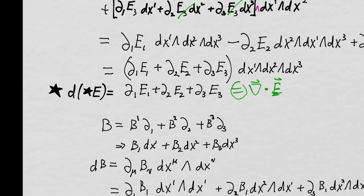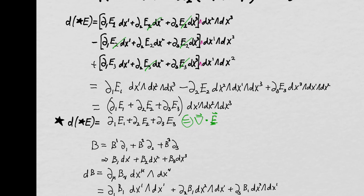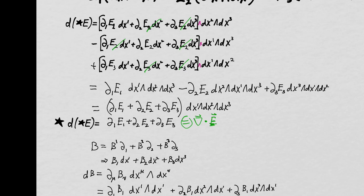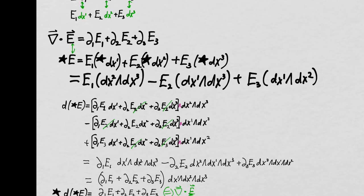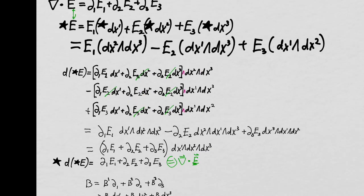That divergence ends up being equal to — as we saw in our last lecture — the Hodge-dual of the exterior derivative of the Hodge-dual of the vector field understood as a vector field on a manifold, where we now replace the Gibbsian unit vectors x, y, and z with our partial derivative unit vectors — partial 1, partial 2, partial 3 — which is how manifolds work.